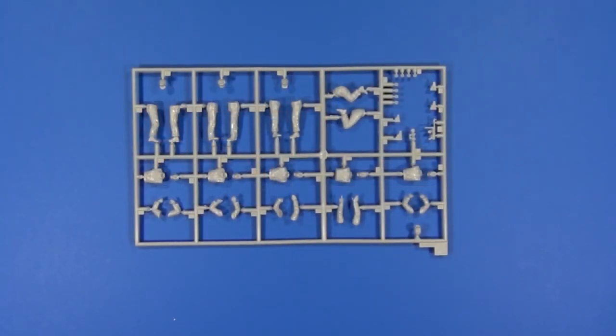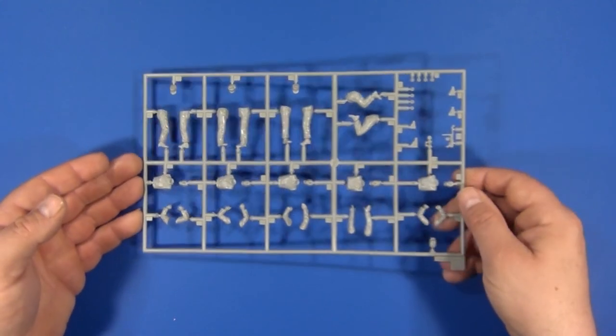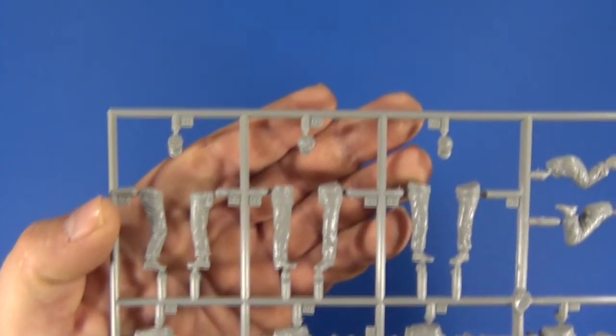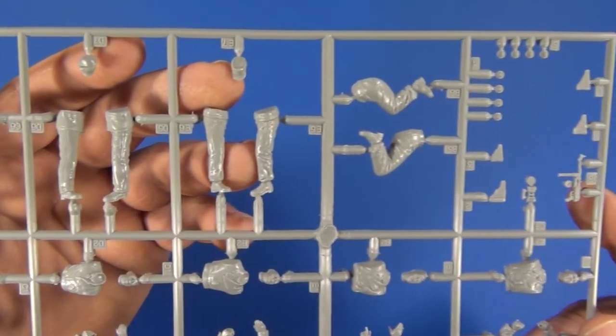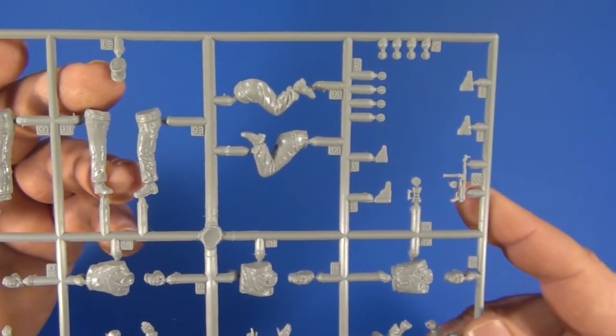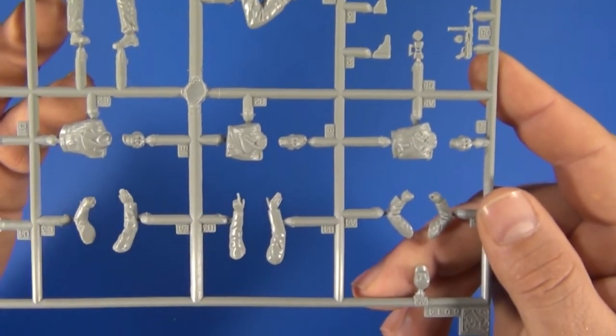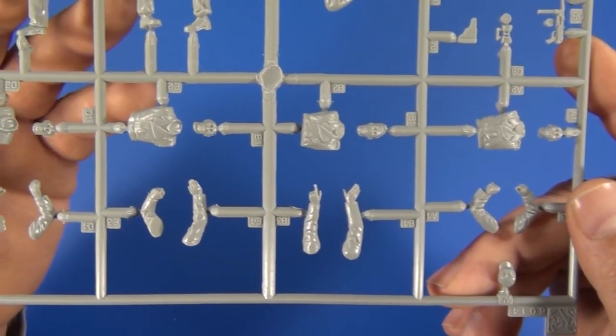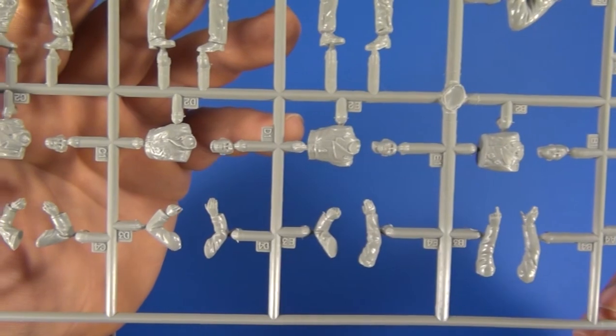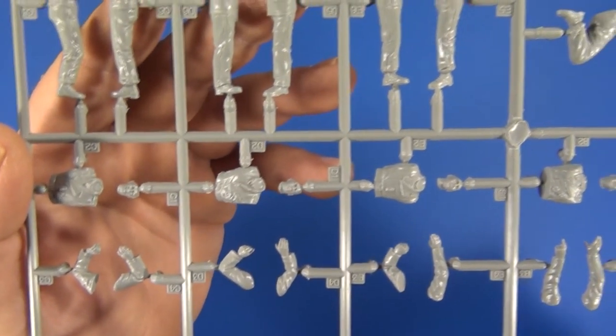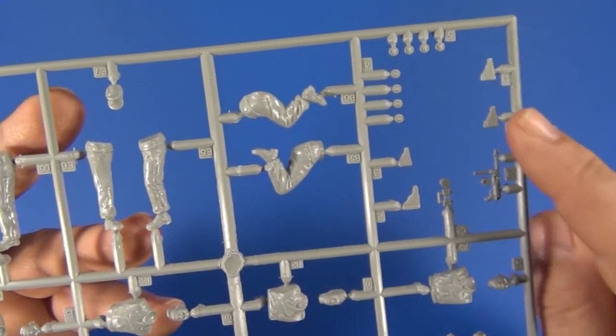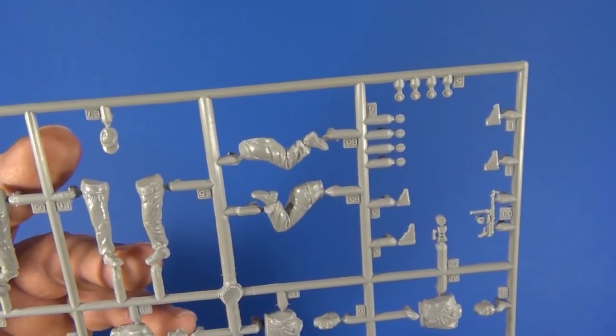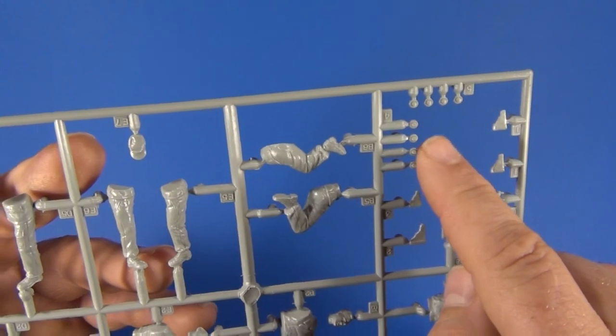Lastly, these are the five Panzer crew members. This must be a fairly old mold - there is quite a bit of flash on the figures and the detail really isn't that crisp. You do get an MP40 there though, and a set of binoculars, some holsters. These are the headset earphones.